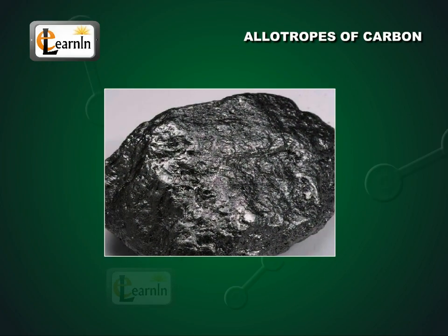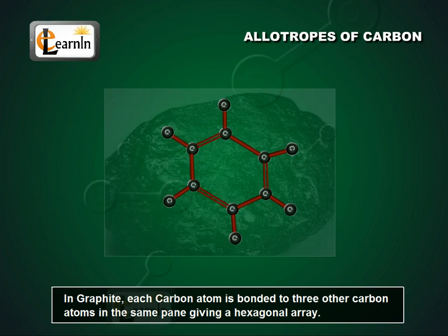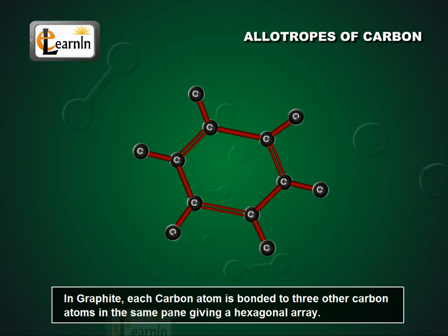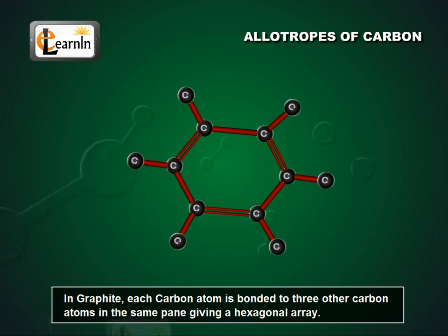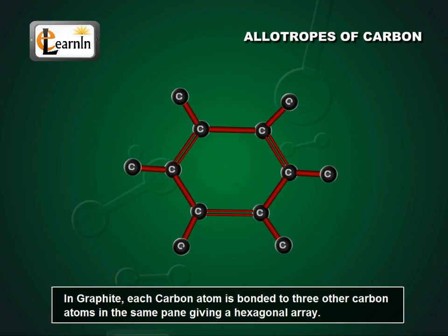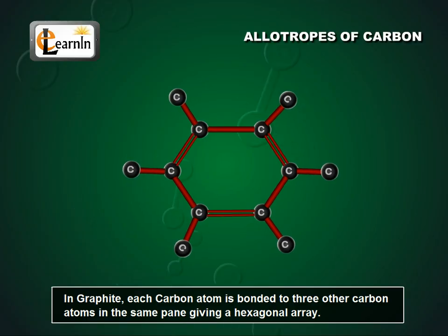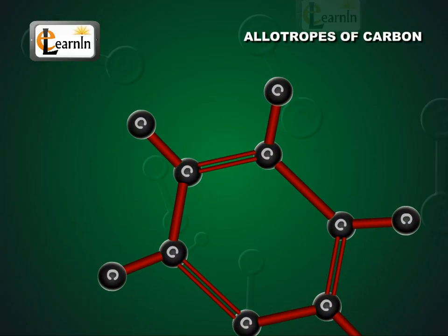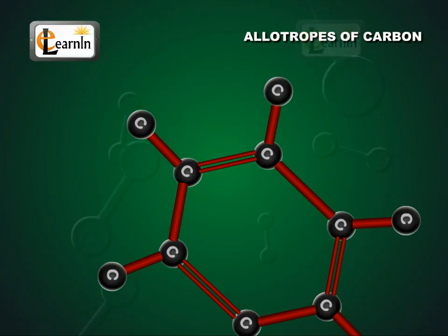In graphite, each carbon atom is bonded to three other carbon atoms in the same plane, giving hexagonal arrays. One of these bonds is a double bond, and thus the valency of carbon is satisfied.